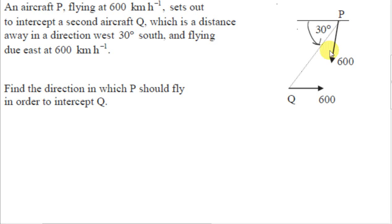An aircraft P flying at 600 km per hour sets out to intercept a second aircraft Q, which is a distance away in a direction west 30 degrees south, and flying due east at 600 km per hour. Find the direction in which P should fly in order to intercept Q.